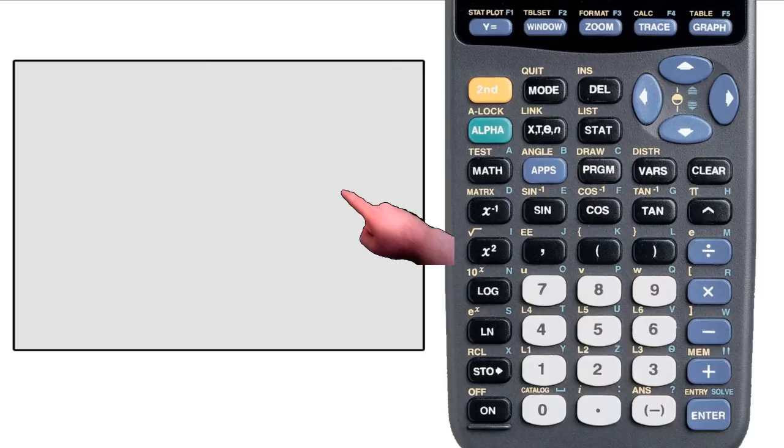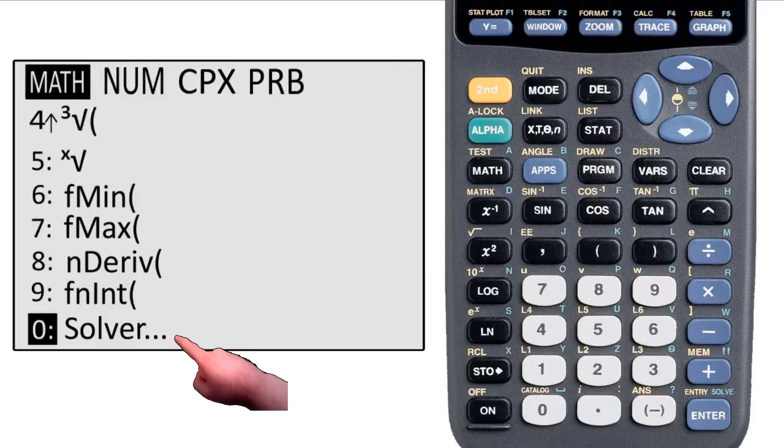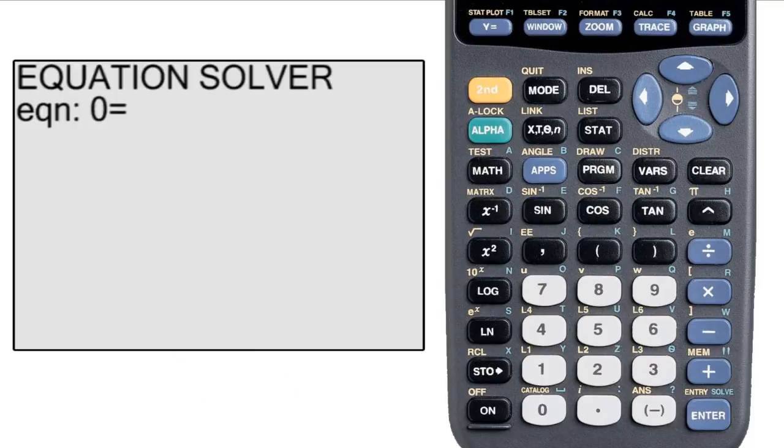To get to the solver program, go to the math menu, then either scroll down to solver or hit zero. You want it to say equation solver at the top of the screen, but it most likely won't, and that's not a problem. Just hit the up arrow until it gets to the screen.